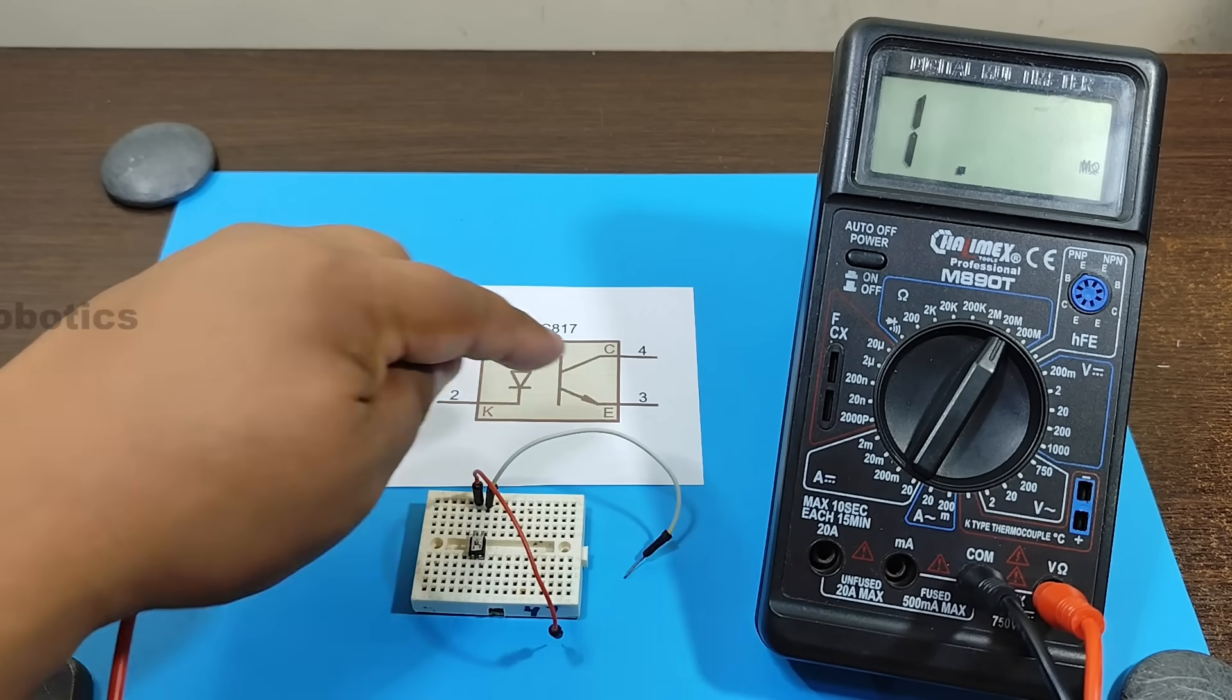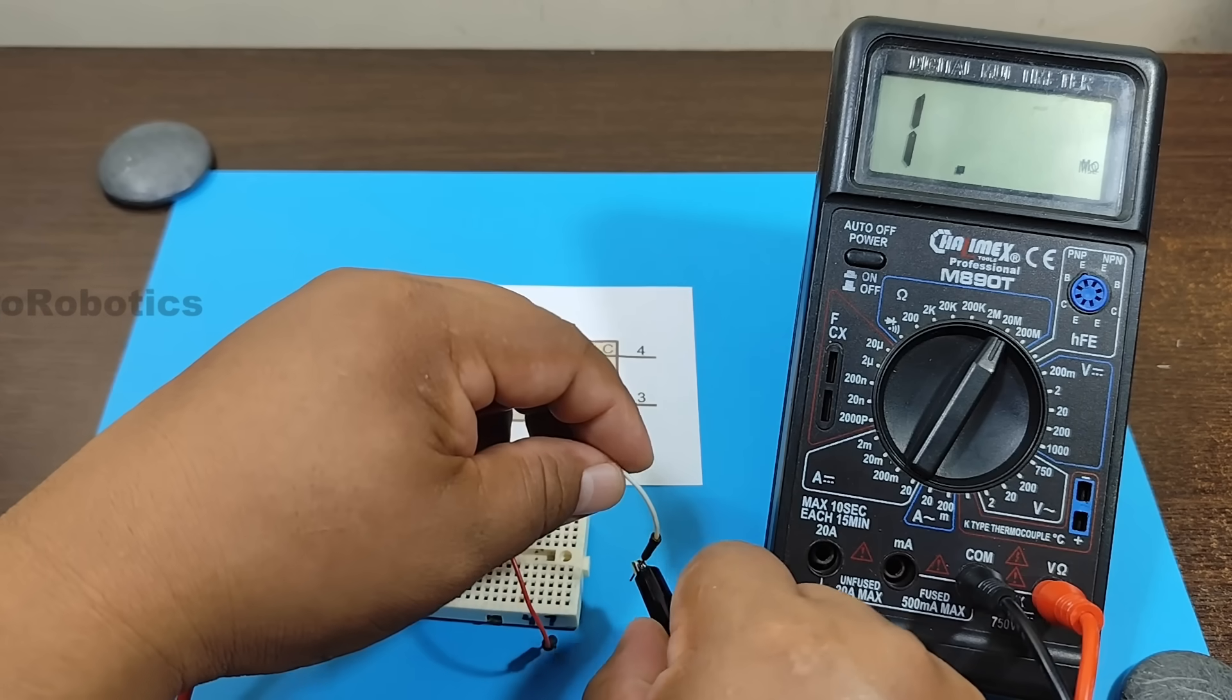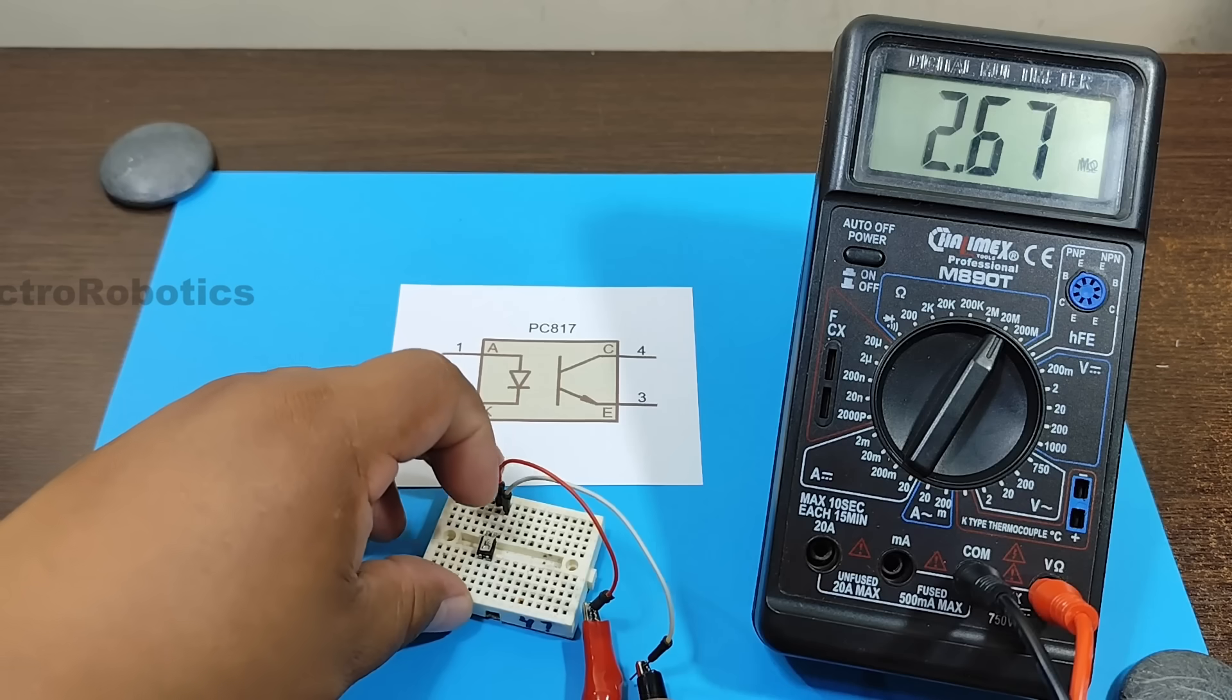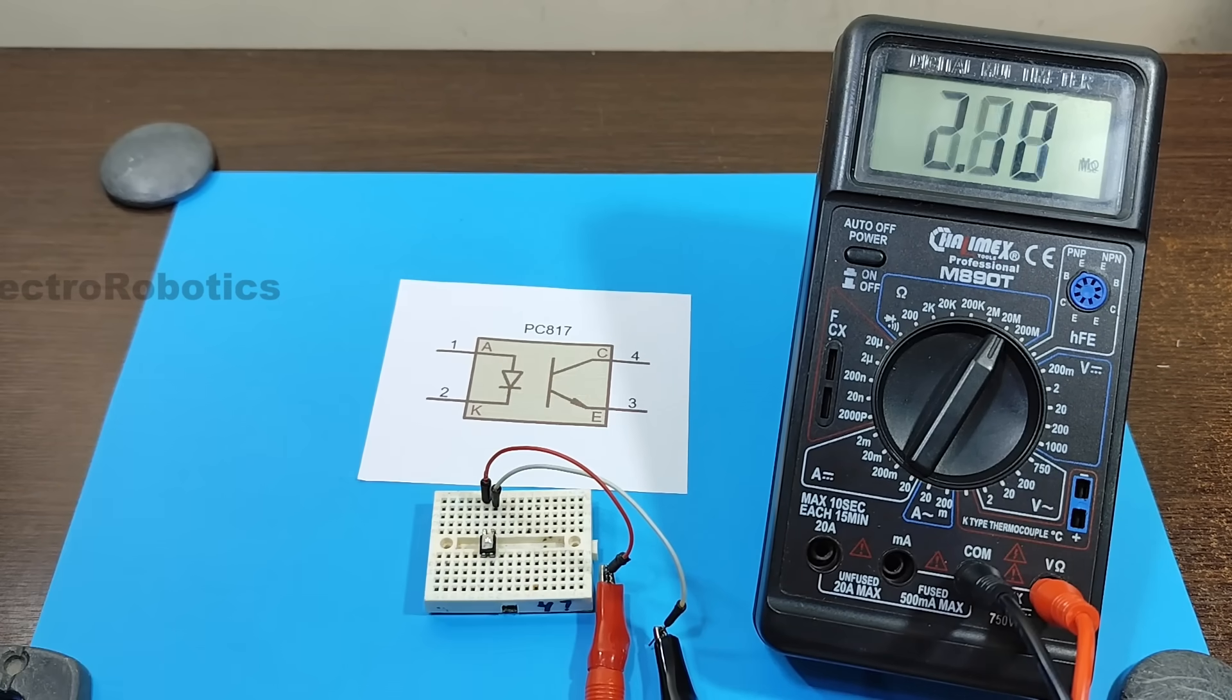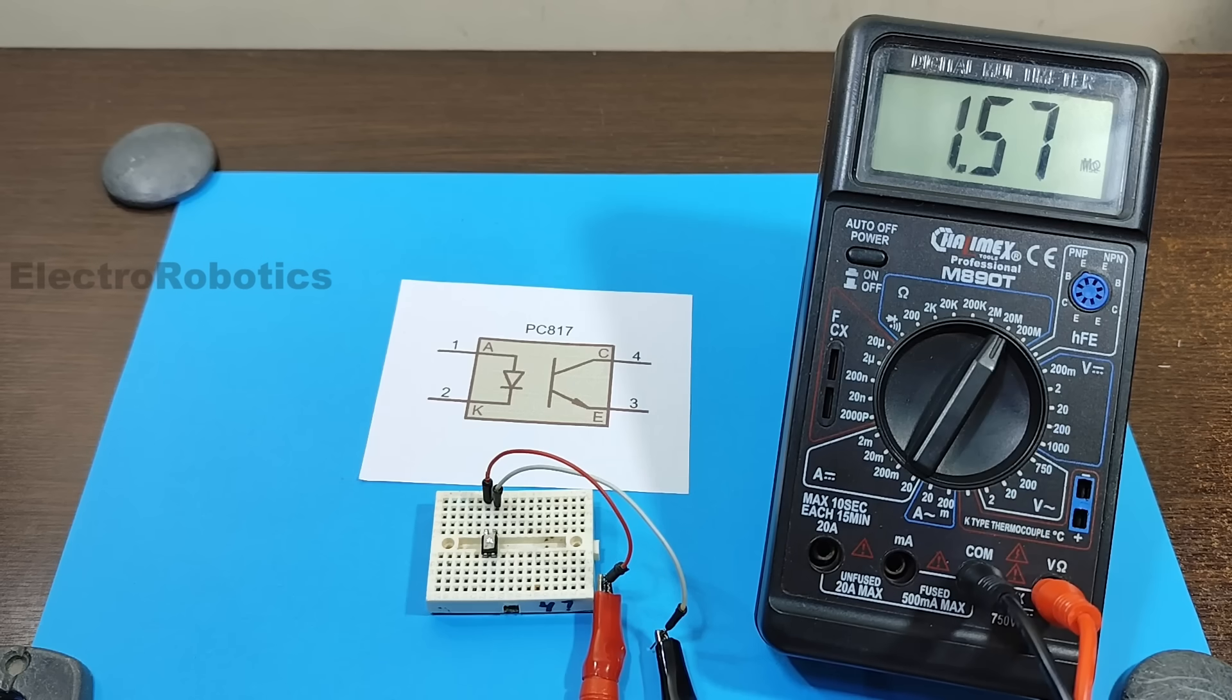Connect the negative lead to the emitter, and the positive terminal to the collector. As you can see, it reads 1.5 megohm.